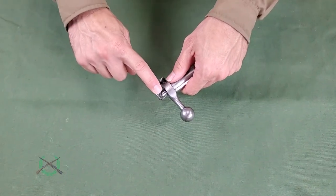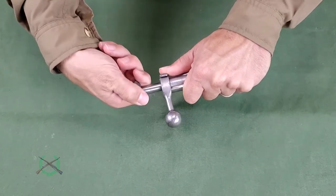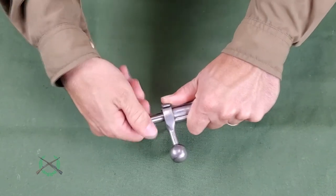Pull the cocking piece to the rear and push the safety to the on position. This will keep the cocking piece drawn to the rear. Rotate the cocking piece counterclockwise, unscrewing it from the firing pin.